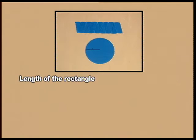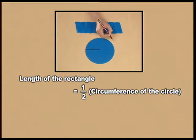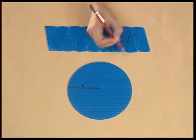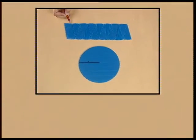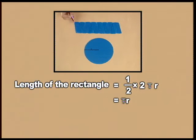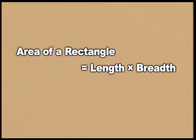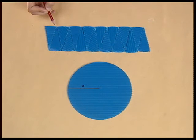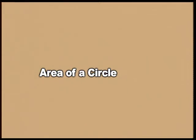The length of the rectangle formed by arranging the sectors of the circle is equal to half of its circumference, and the breadth is equal to the radius of the circle. If we assume the circle to be of radius r, then the length of the rectangle is half into two pi r, which is pi r, and the breadth is r. The area of the rectangle is length multiplied by breadth, so the area becomes pi r into r, which is pi r squared. Since the area of the circle is the same as the area of this rectangle, the area of the circle is pi r squared.